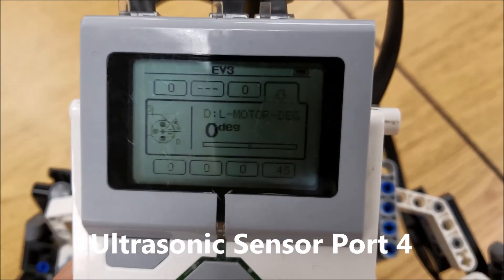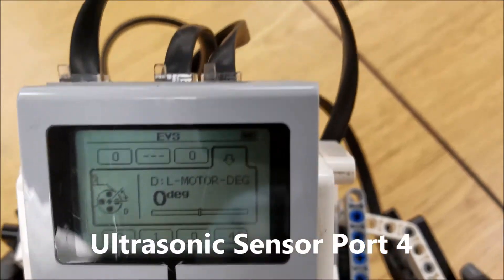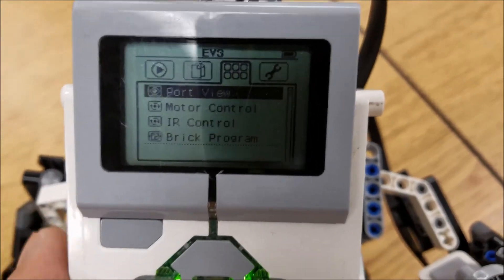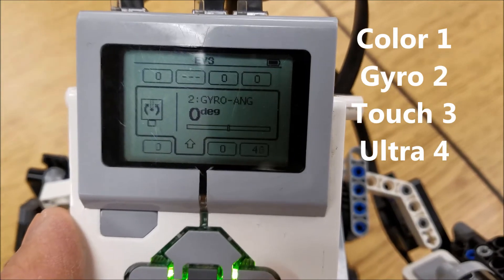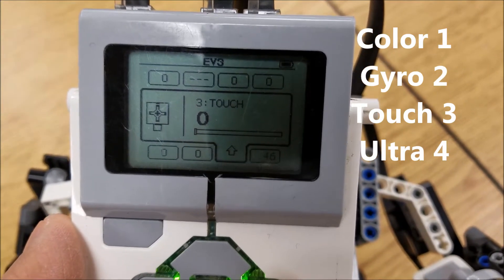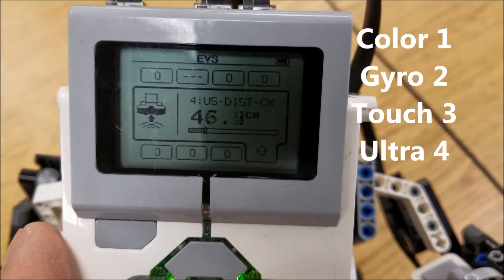you have your touch and port four, you have your ultrasonic sensor. So let me just go over that real quick again. So one is color, two is gyro, three is touch,